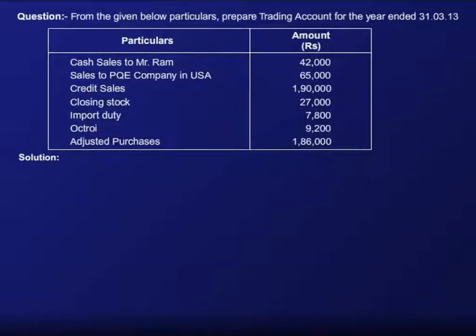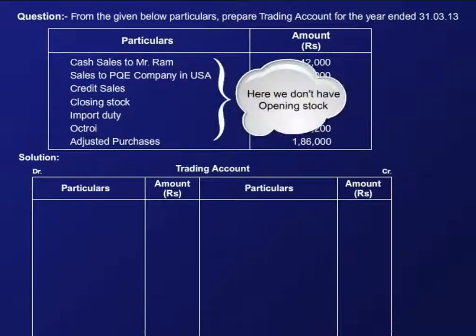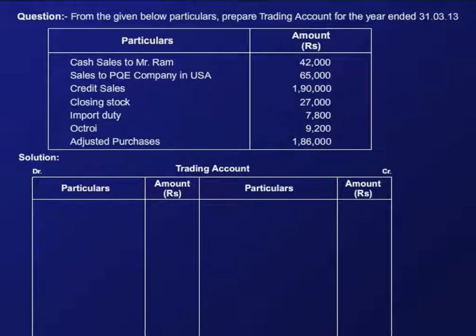Let's look at the format of the trading account. Firstly, we begin with the debit side. Look carefully — here we don't have opening stock. For the time being, let's proceed further. Here we have adjusted purchases instead of only purchases.